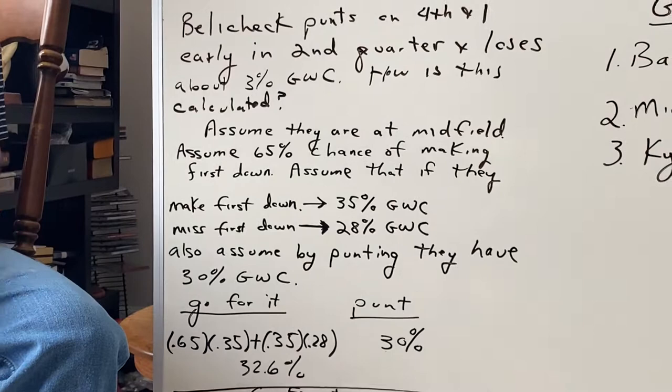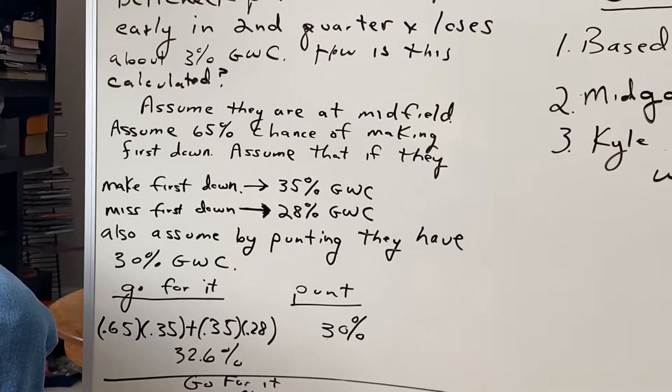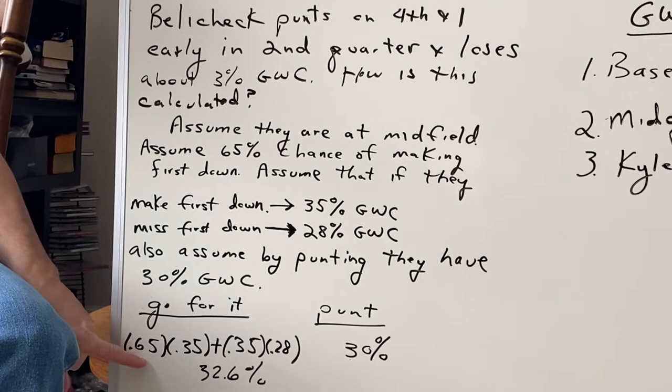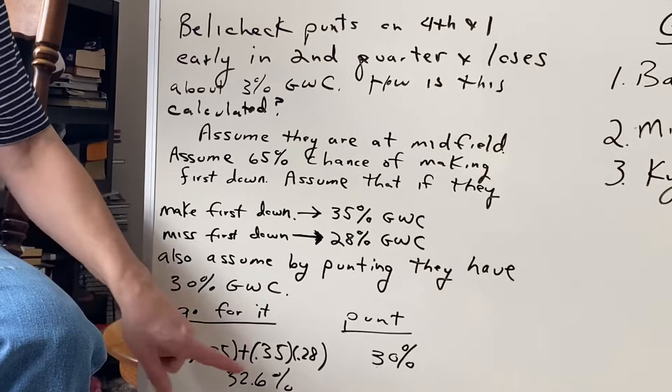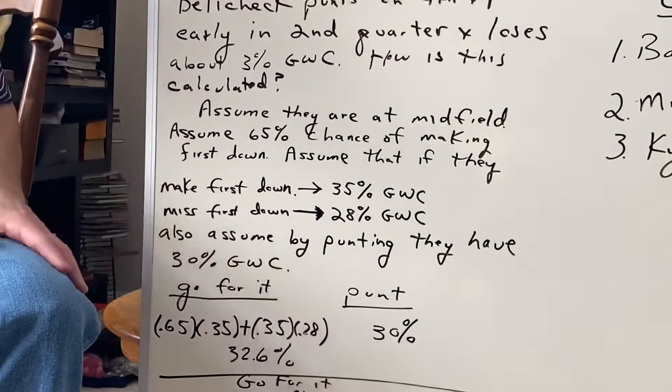What if they go for it? If they go for it, one of two things can happen — they can either make a first down or not. If they make a first down, we're giving it 65% of the time, meaning they have 35% game-winning chances. And when they miss the first down, which is 35% of the time — because 65% plus 35% is 100% — we're giving them 28% game-winning chances. If we add this all together, we get 32.6%.